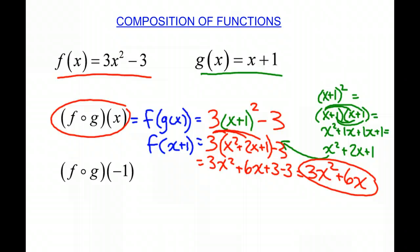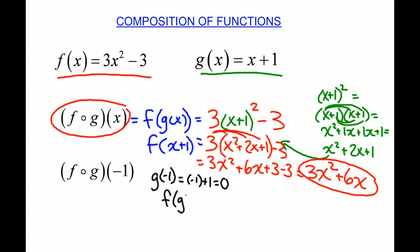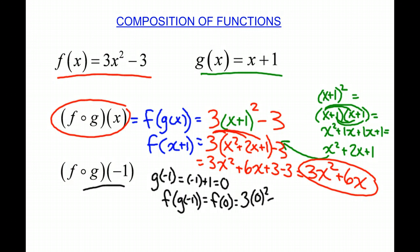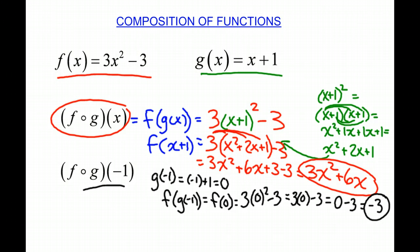Again, we can do this with a value. We're going to find f of g of negative 1. So first we have to find g of negative 1, which is going to be negative 1 plus 1, which is 0. So now we're finding f of g of negative 1, which is actually f of 0. We're going to plug in 0 whenever we see x in the equation. So we have 3 times 0 squared minus 3. 0 squared is 0, so we have 3 times 0 minus 3. 3 times 0 is 0. 0 minus 3 equals negative 3. Therefore, the solution to f of g of negative 1 is negative 3.